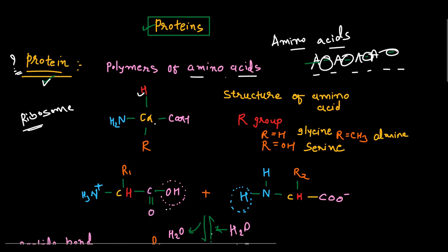Before we talk about the classification of proteins, let us understand what amino acids are and how they make peptide bonds to form the protein sequence. This is the structure of an amino acid. In this structure, there are different groups attached — the amino group, carboxyl group, hydrogen atom, and the R group.